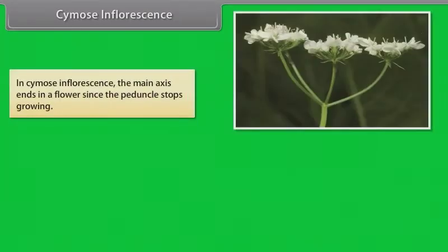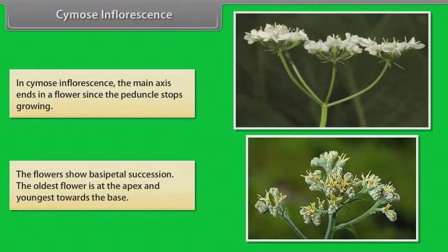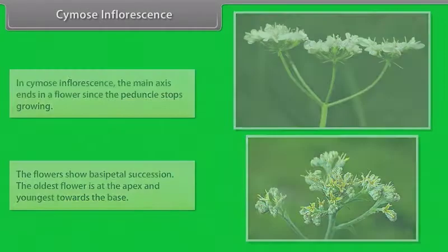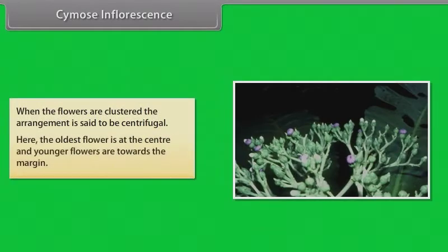In cymose inflorescence, the main axis ends in a flower since the peduncle stops growing. The flowers show basipetal succession — the oldest flower is at the apex and the youngest towards the base. When the flowers are clustered, the arrangement is said to be centrifugal, where the oldest flower is at the center and younger flowers are towards the margin.